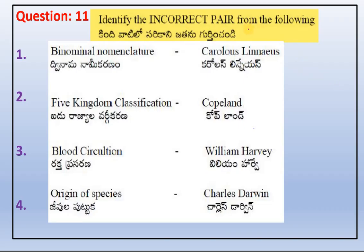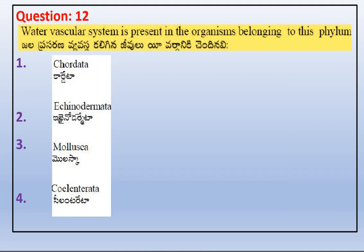First question: identify the incorrect pair from the following. From the given pairs, identify the incorrect pair which is not the correct one. The incorrect pair is five kingdom classification — Copeland. The second option: water vascular system is present in organisms belonging to this phylum.